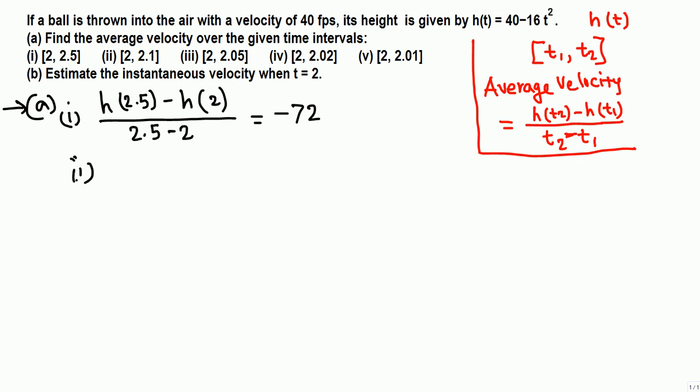In part two, same thing—time interval 2 to 2.1, so h at 2.1 minus h at 2 divided by 2.1 minus 2. Evaluate the height at 2.1: here is the height function, all you have to do is replace T by 2.1, you get height minus h(2), replace T by 2, that's already found back on the top here. Divided by 2.1 minus 2, which is 0.1, and you will get negative 65.6.